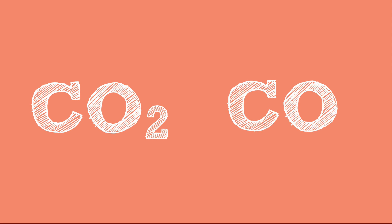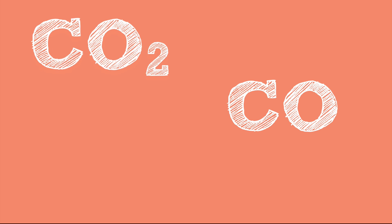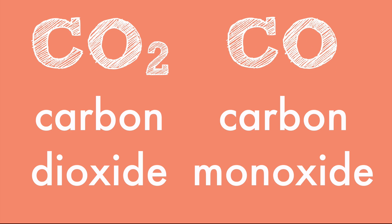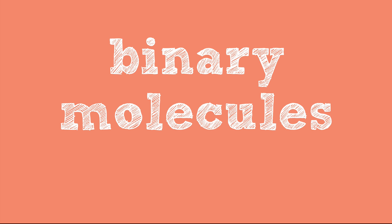When we talk about molecules, we need a way to know what we're talking about. Instead of saying CO2 or CO all the time, we give them names like carbon dioxide or carbon monoxide. The names tell us how many of each atom are present in each molecule of the compound. I'll show you how to name binary molecules because they're fairly simple to name and they're used often in chemistry.